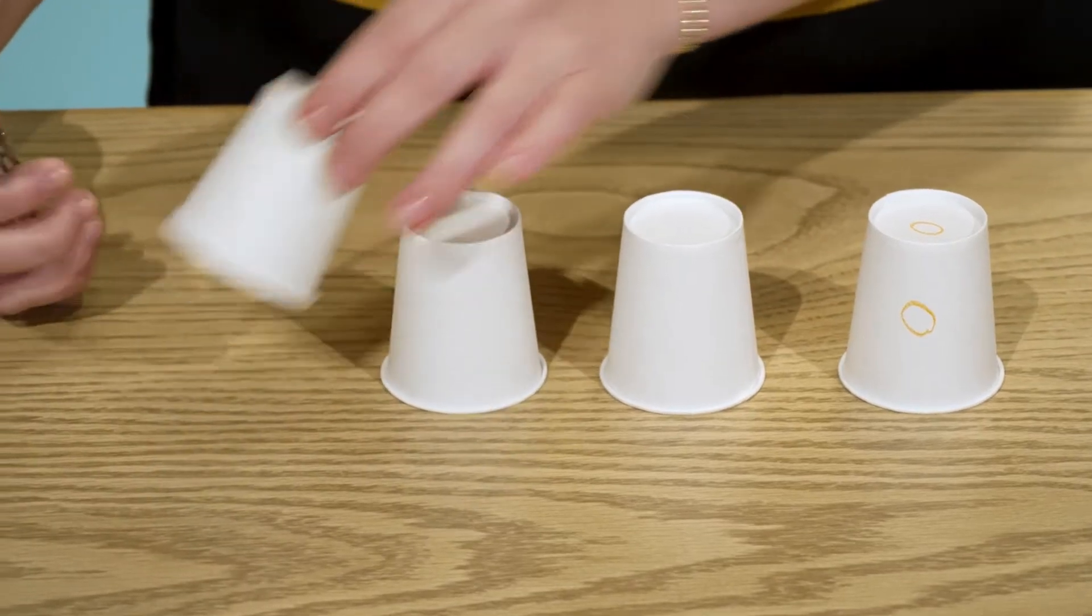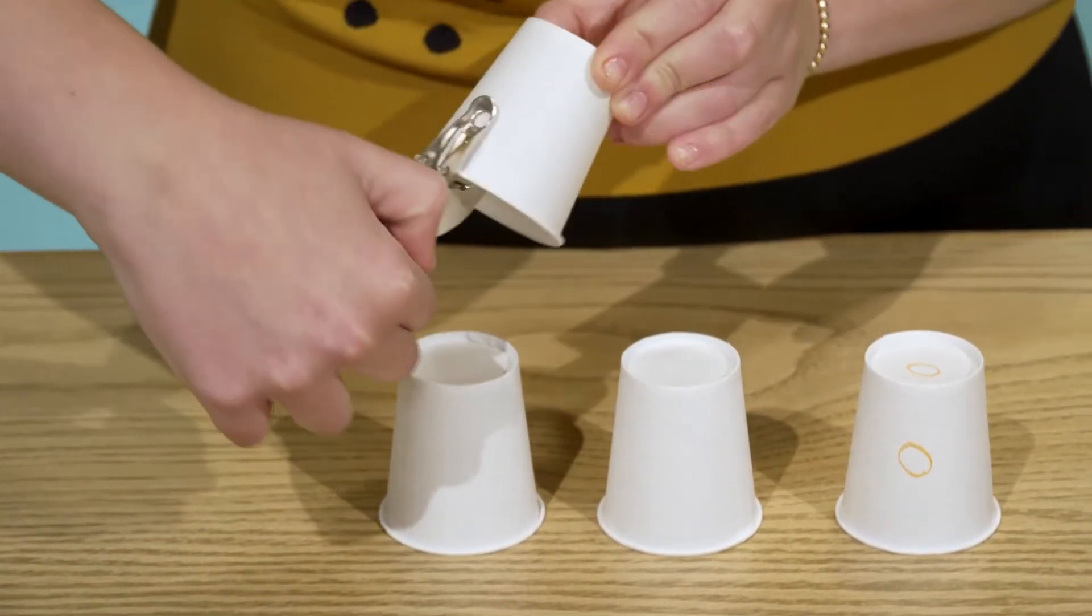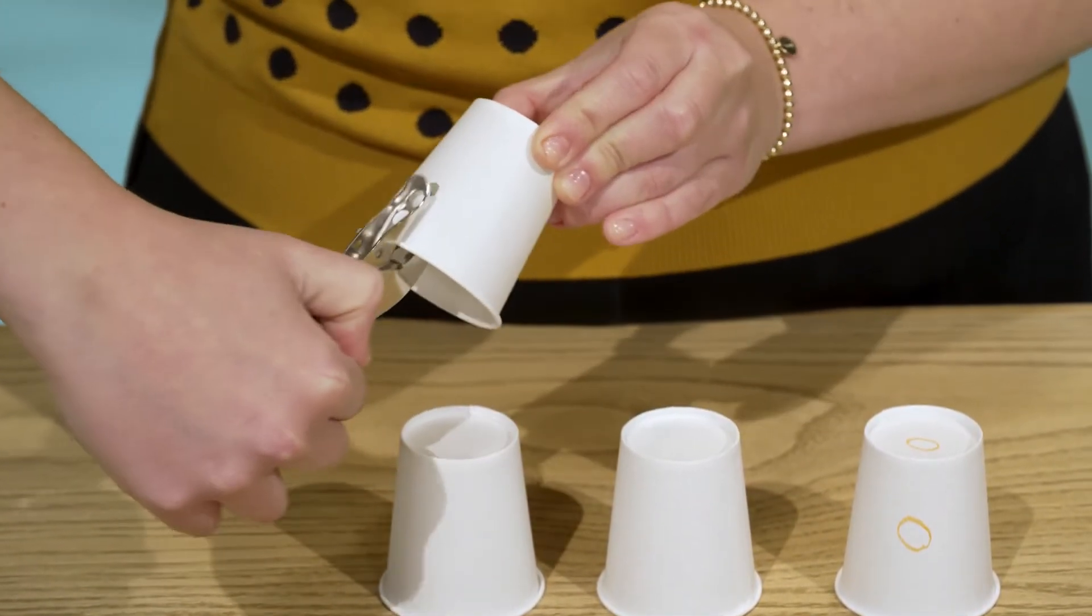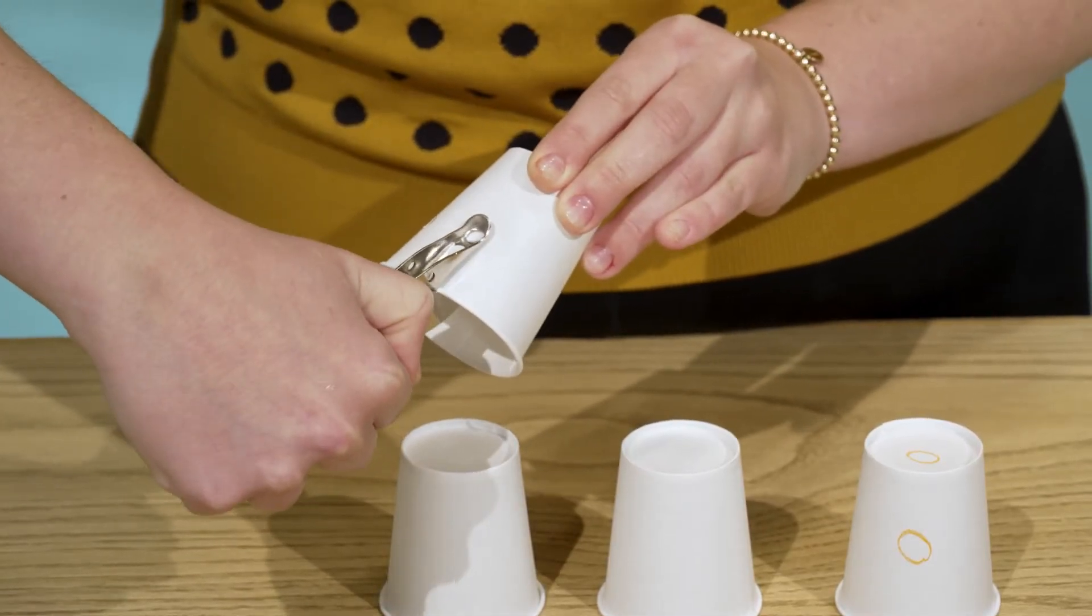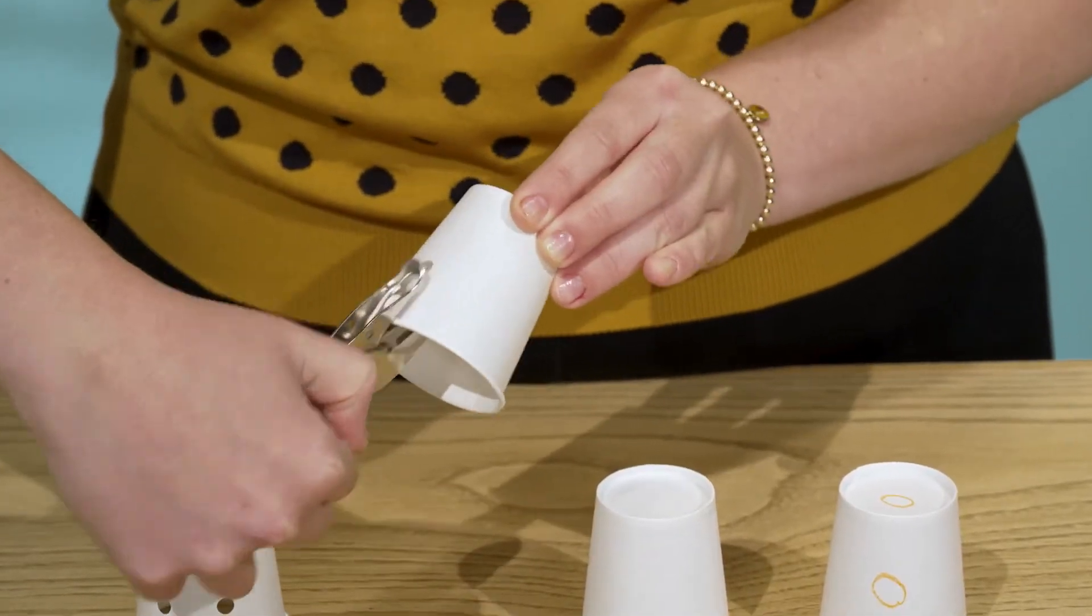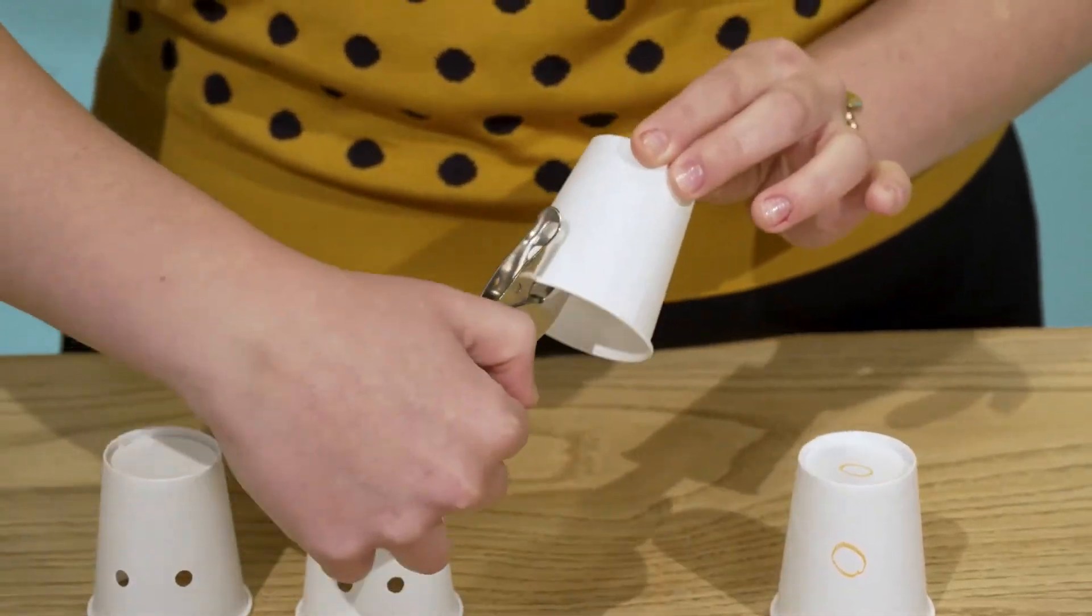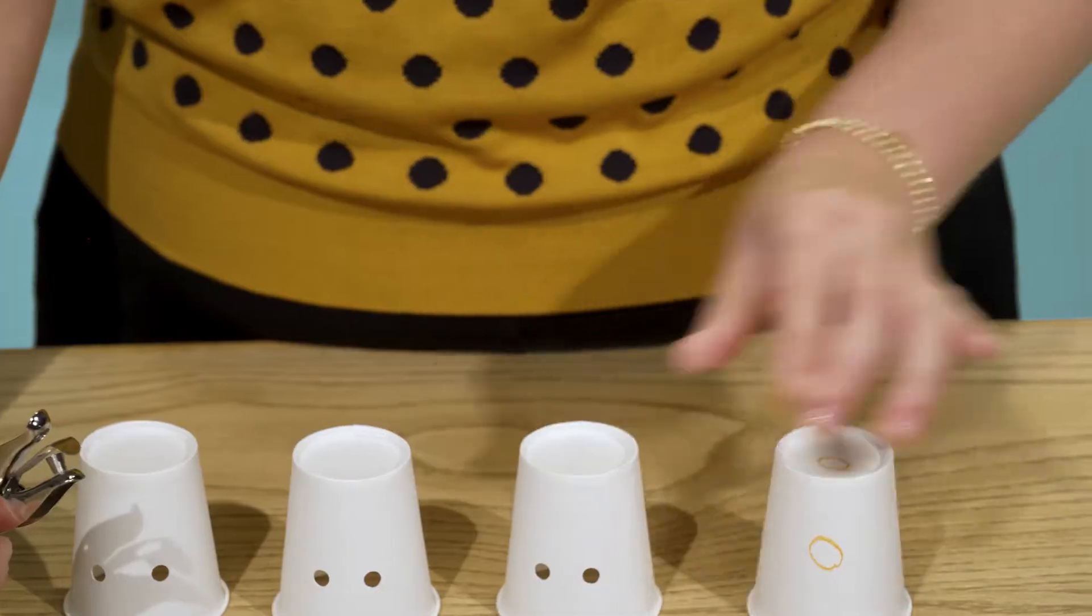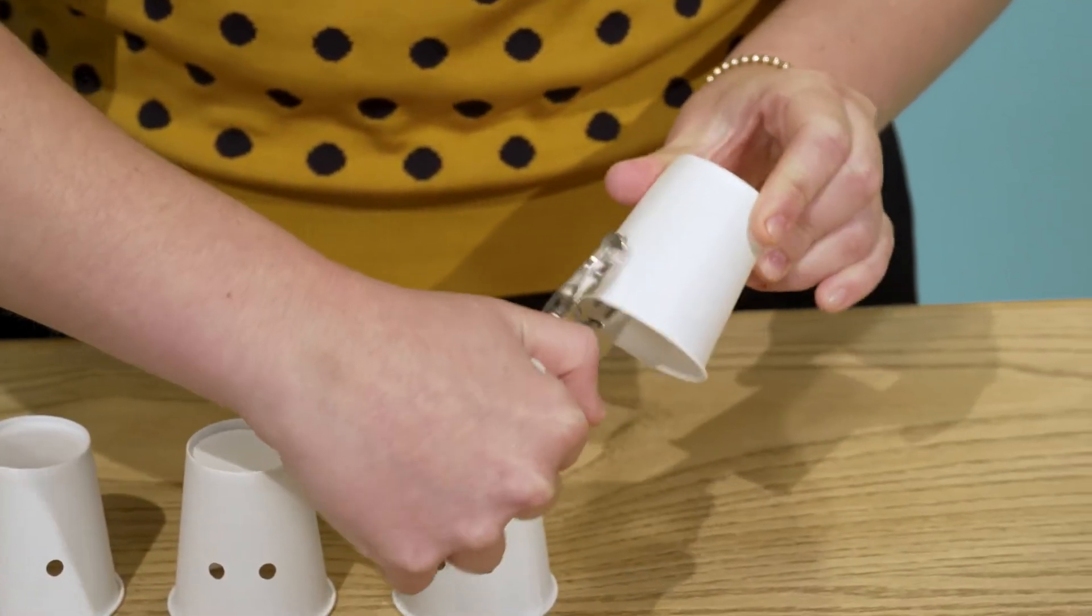Next, use your hole punch to punch two holes about one inch apart in the middle of the side of each of the four cups. Be sure not to punch holes through your artwork, though.